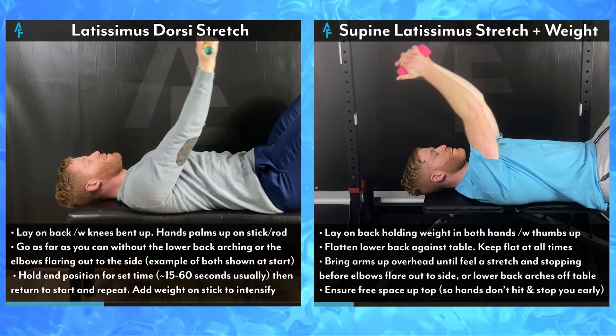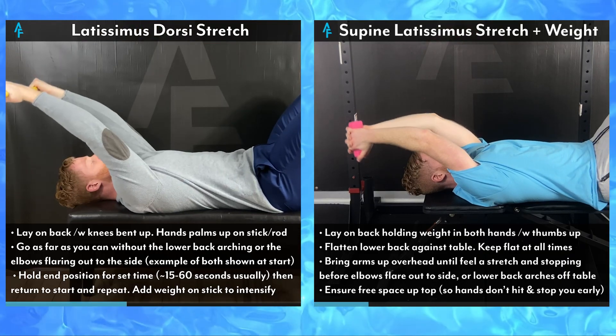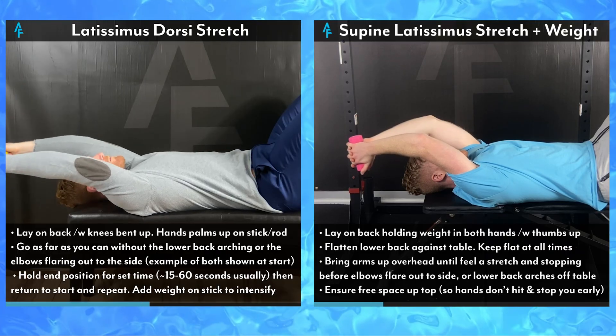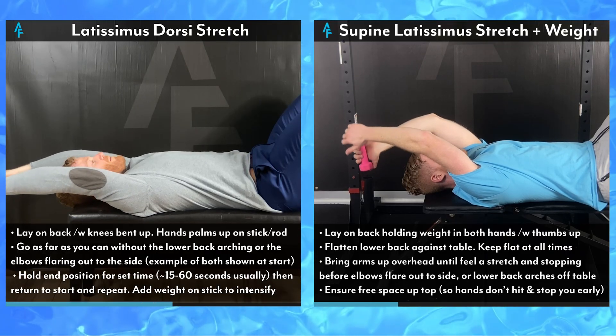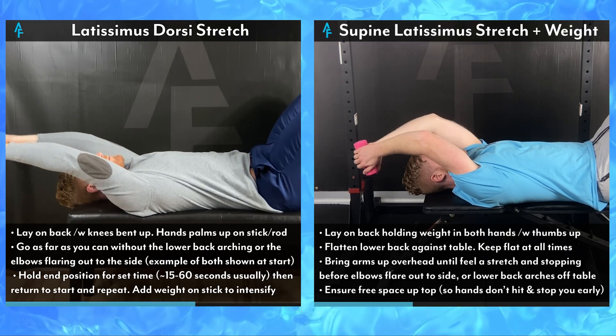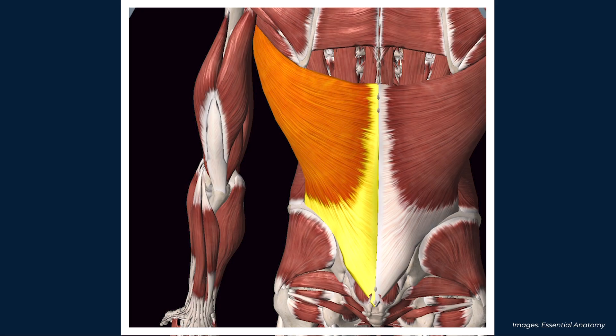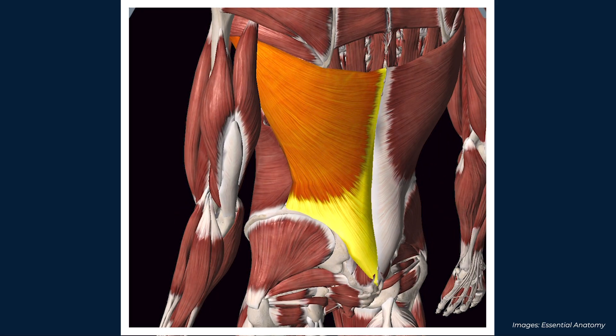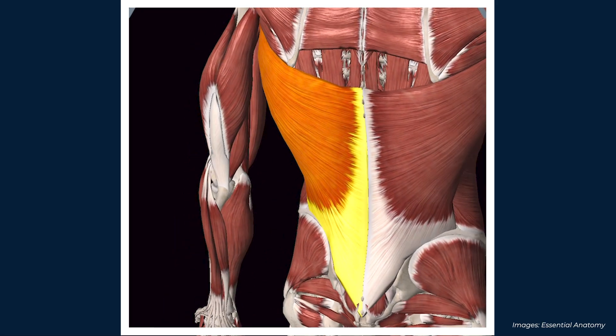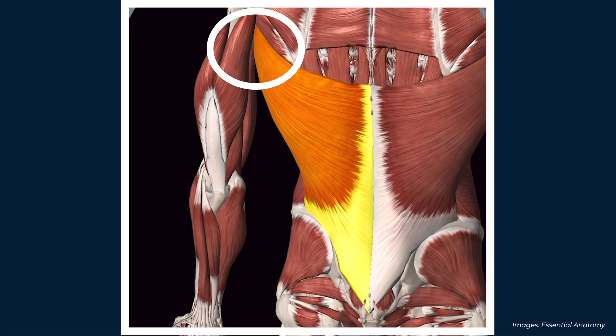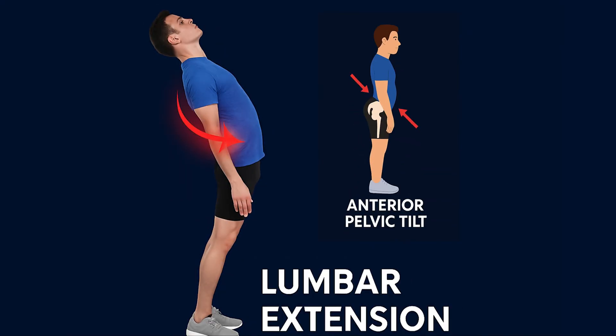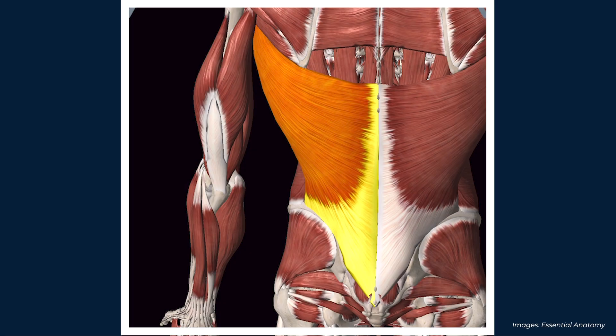Next up are exercises to address the second flexibility limitation — left is easier, right is more advanced. These improve flexibility of the latissimus dorsi. This muscle attaches from the lower back and pelvic bone up to the arms. Think again of that string: if shortened, the low back and pelvis will be pulled into extension and anterior tilt, which is why limitations in latissimus flexibility can contribute.